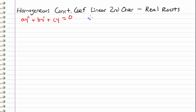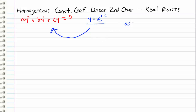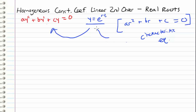Recall that we determined, in order to solve this differential equation, we are going to assume a solution of the form e to the r times t, where r is an unknown we are solving for. If we differentiate this twice and plug the results back in, we can solve for r using the characteristic equation, which is a·r² plus b·r plus c equals 0.